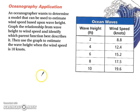Let's look at an oceanography application. An oceanographer wants to determine a model that can be used to estimate wind speed based upon wave height. Graph the relationship from wave height to wind speed and identify which parent function best describes it. Then use the graph to estimate the wave height when the wind speed is 10 knots.